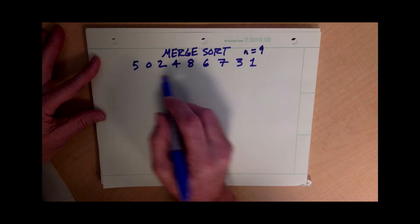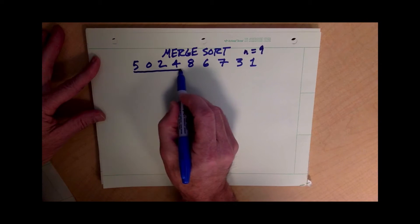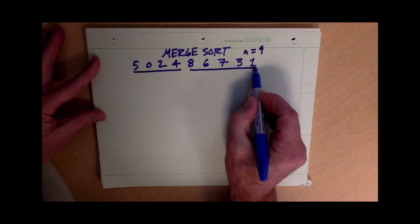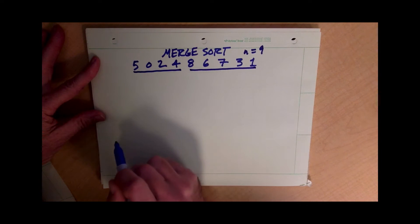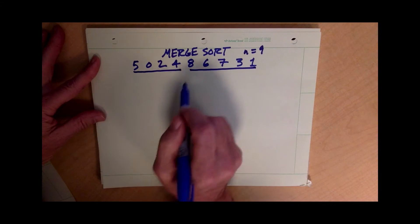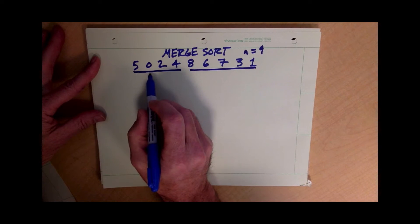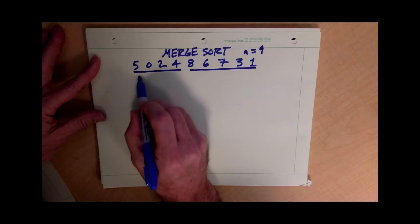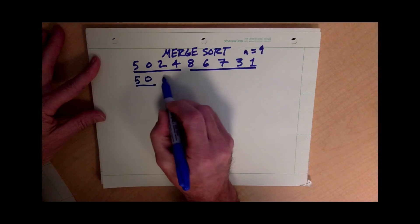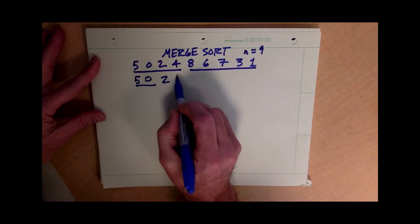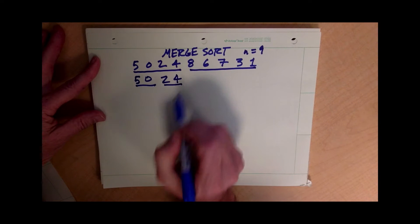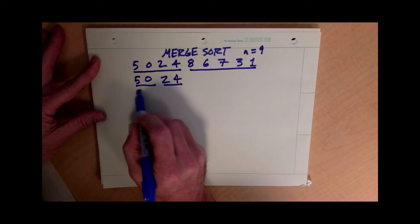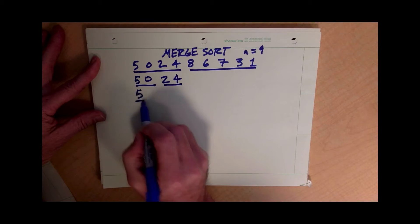To begin, we're going to split the big list up into two sub-lists. You can do this recursively. I'm going to go into this smaller list and split that up into two smaller lists that I'll be sorting in a few minutes. And I'm going to split this list up into two smaller lists as well.